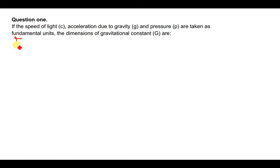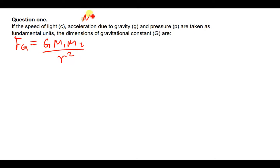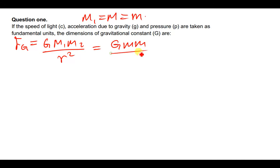We know the force of gravity is given by F = G·M1·M2 / R². If we assume M1 equals M2, which we write simply as M, this becomes F = G·M² / R².